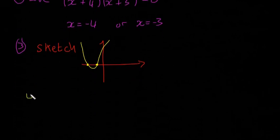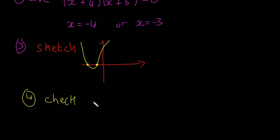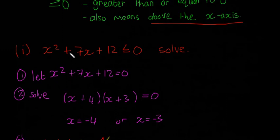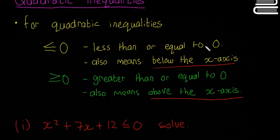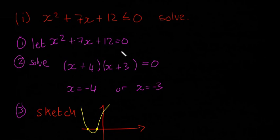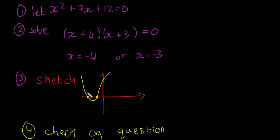And then the last step, step number 4, I'm going to check the original question. So just check the original question. Where is x squared plus 7x plus 12 less than or equal to 0? So if we go back up, less than or equal to 0 also means below the x-axis. So what it's asking is where is this curve below the x-axis? And we can see that it's below the x-axis here in the shaded region.